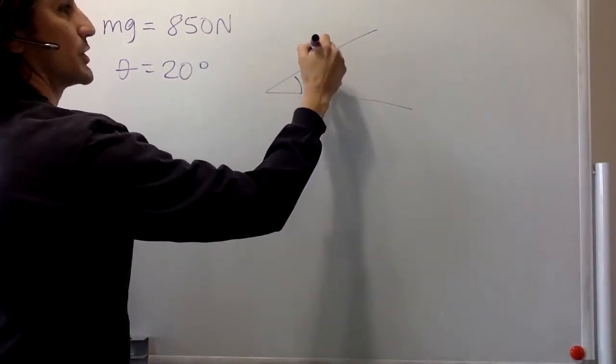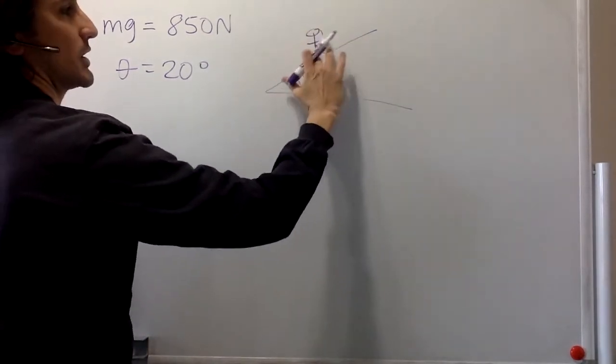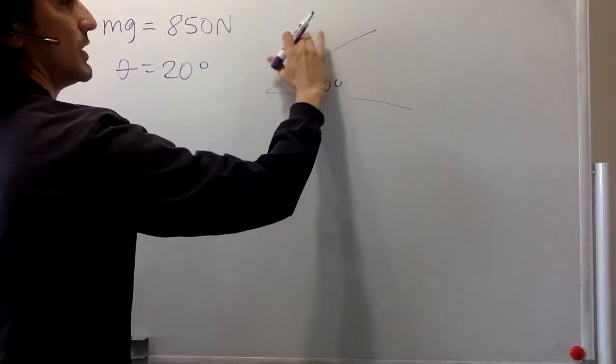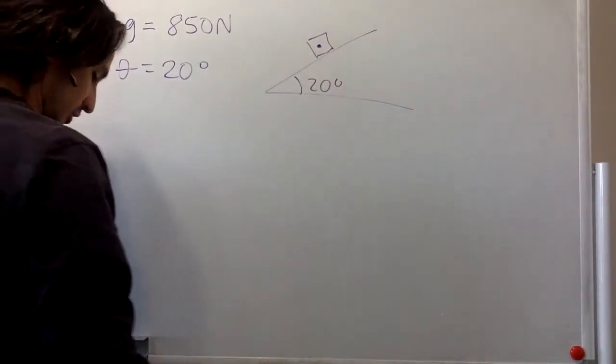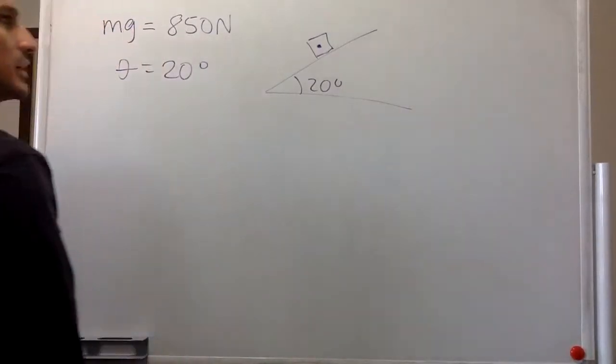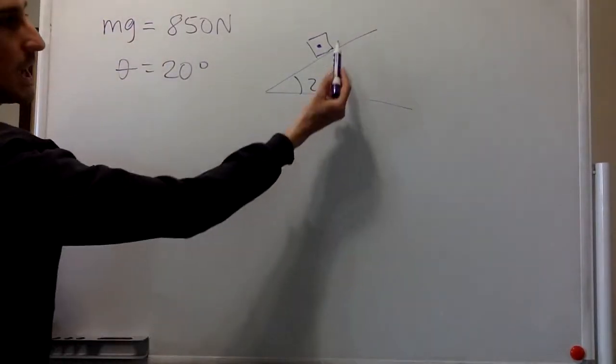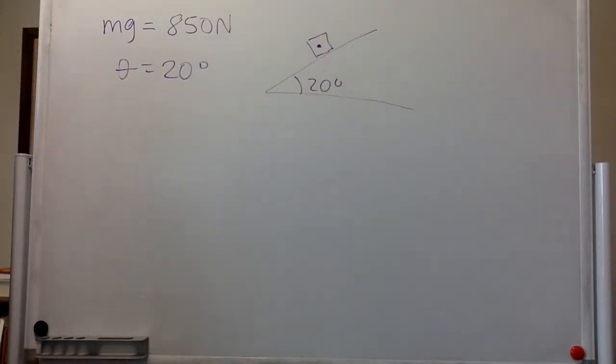Also, when the worker is over here, we can model it just as well as a box, this is a cubic worker. And the problem tells us that it is standing, and that means that it is not moving.